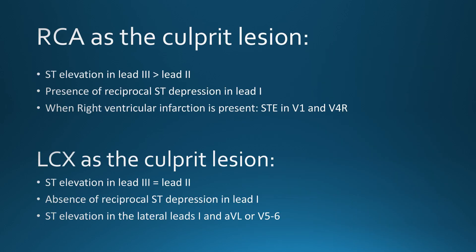Features supporting the right coronary artery as the culprit: ST elevation in lead 3 greater than lead 2; presence of reciprocal ST depressions in lead 1; and when right-sided chest leads are applied, ST elevation in V4R, with a hint of ST elevation in V1 with normally placed leads. Whenever we see ST elevation in V1 along with inferior wall MI, go for right-sided leads — if V4R is elevated, it is highly specific for right-sided involvement, since the right ventricular branches arise from the RCA.